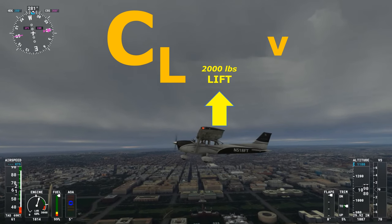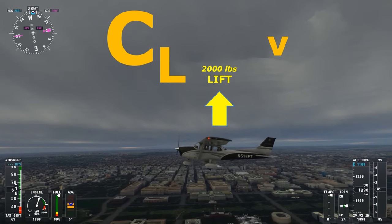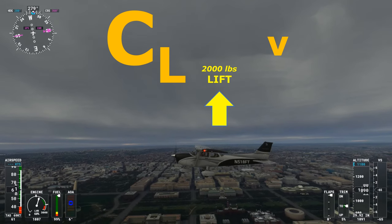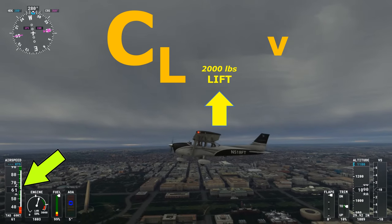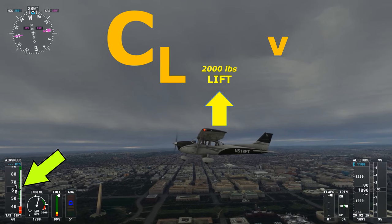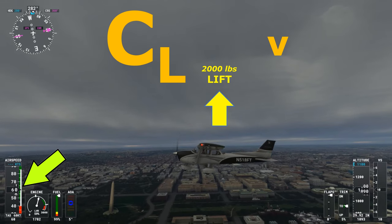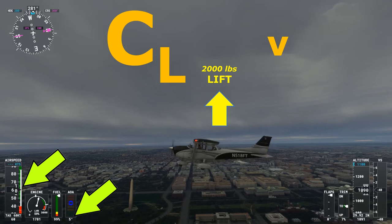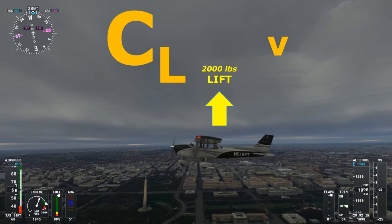Once again in straight and level, unaccelerated flight, but rather than maintaining 105 knots as before, we have around 60 knots only. This large reduction in V has caused us to need a higher angle of attack, read here around 5 degrees, in order to maintain 2,000 pounds of lift.